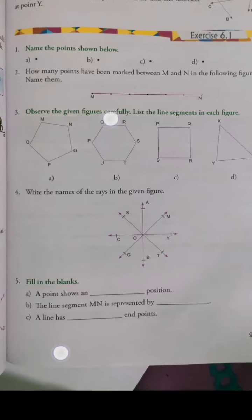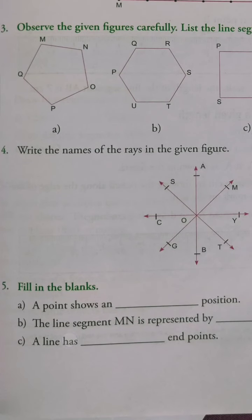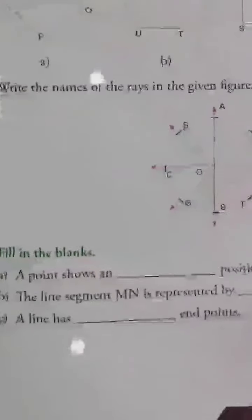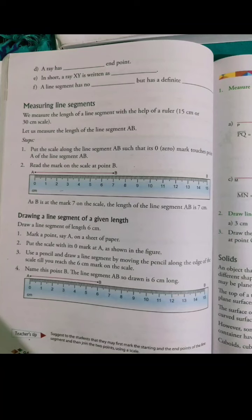Now come to the next part. A line has blank end points. How many end points does a line have? What is a line? A line is something that has neither a start nor an end. Where it starts and where it ends, we don't know. It means it has no end points. It has no end points at all.